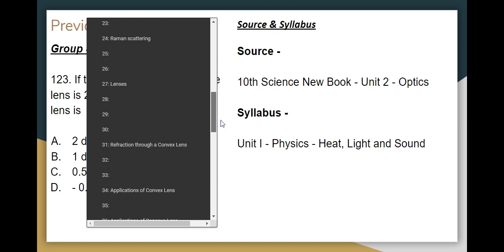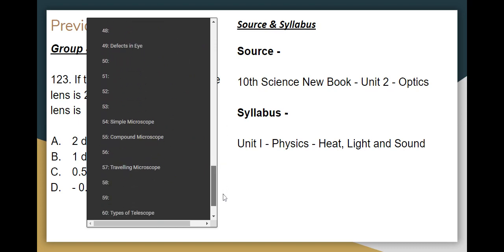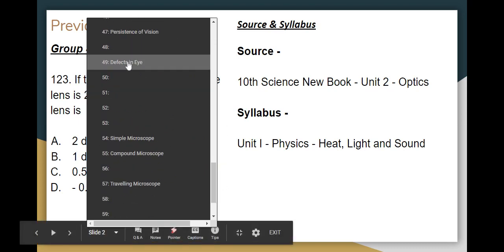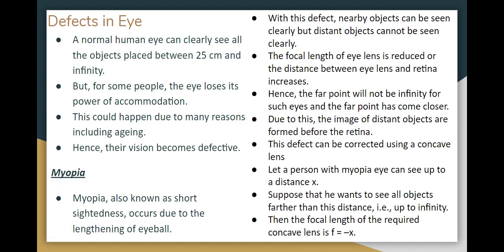Here is the 5th part. We will see the 49th slide — defects in the eye. A normal human eye can see objects from the near point to the far point, that means from 25 centimeters to infinity.